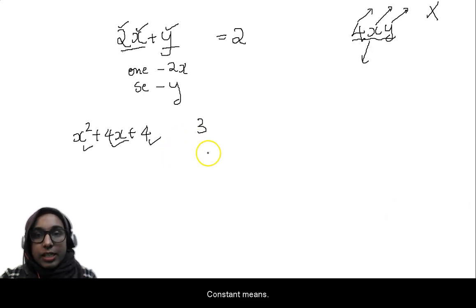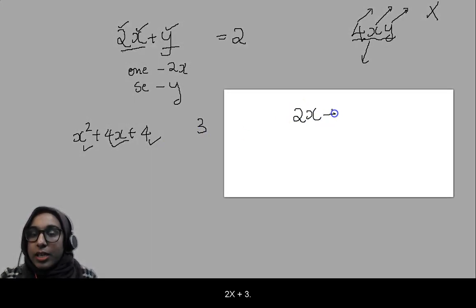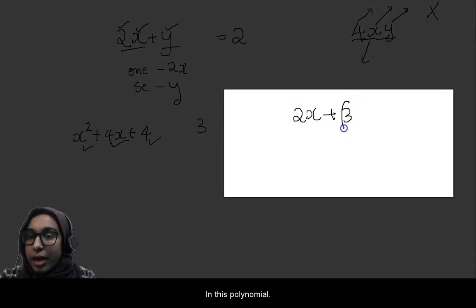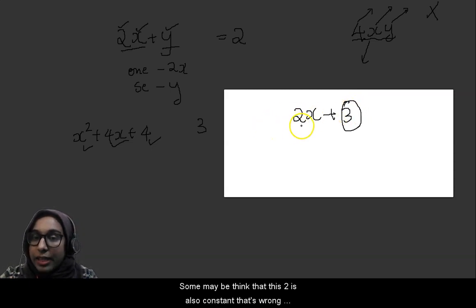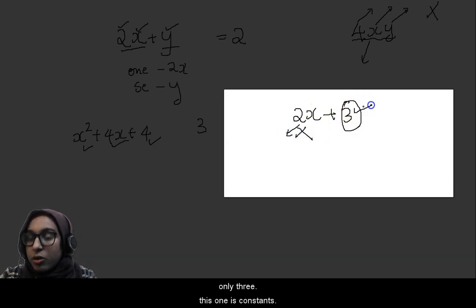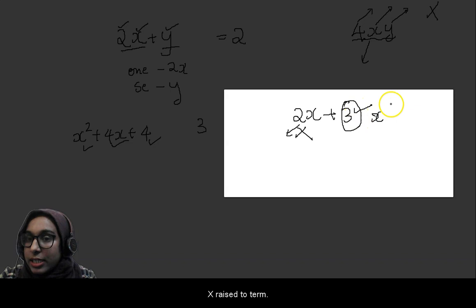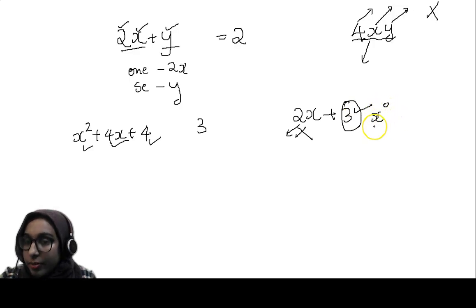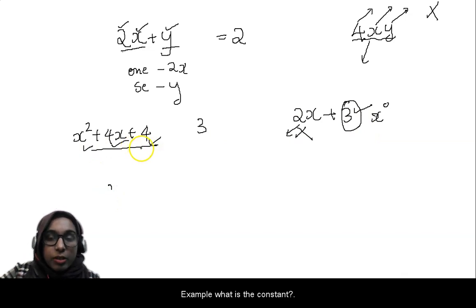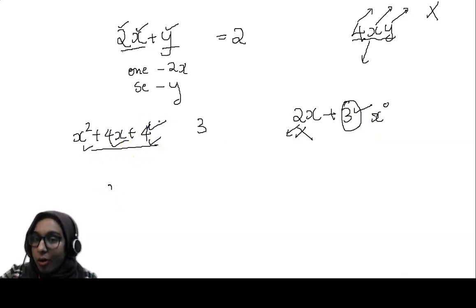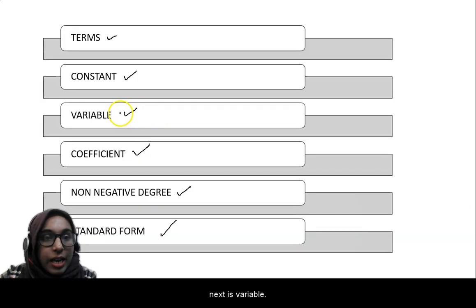Next is constants. Constant means — in the polynomial 2x plus 3, the number 3 is called the constant. Some may think that 2 is also a constant — that's wrong. Only 3 is the constant, because it has no variable (it is x raised to 0). So in the example x squared plus 4x plus 4, what is the constant? Correct — 4 is the constant.